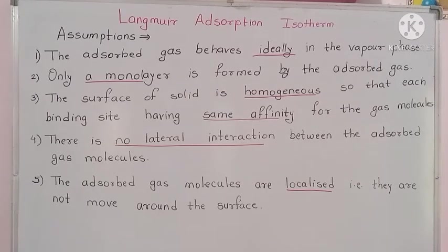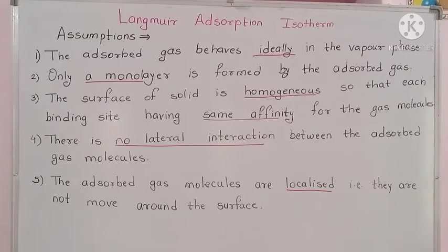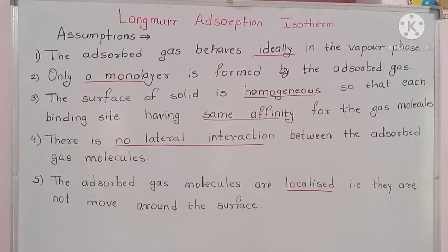The third assumption is that the surface of a solid is homogeneous, so that each binding site has the same affinity for the gas molecules. Langmuir assumes that the surface of a solid should be homogeneous — surface imperfections or defects are not allowed in the Langmuir assumptions. Due to the homogeneous surface, the surface molecules have the same affinity towards the gas molecules.